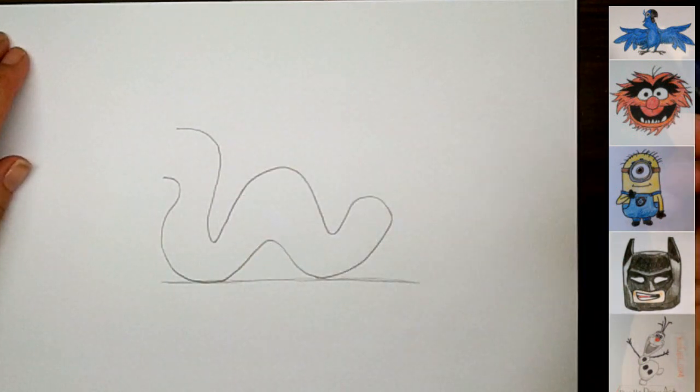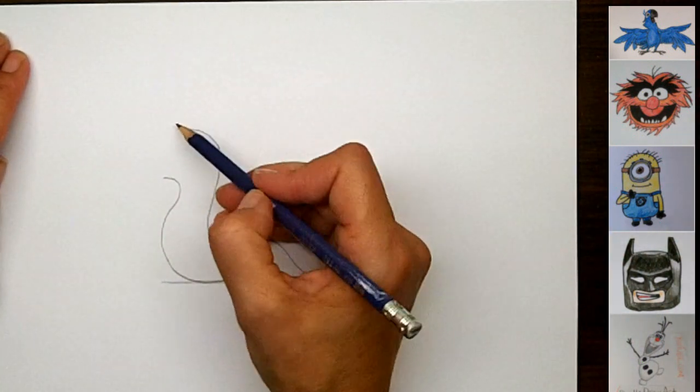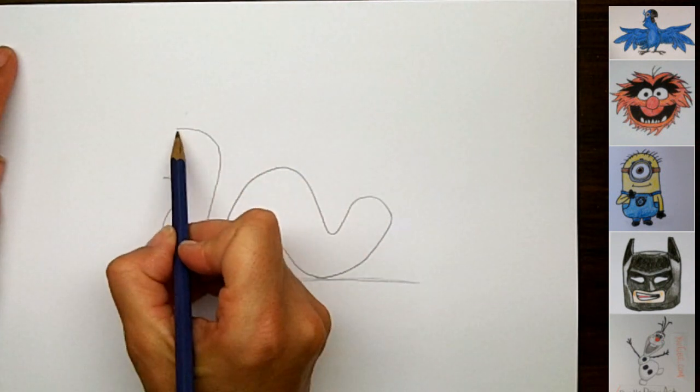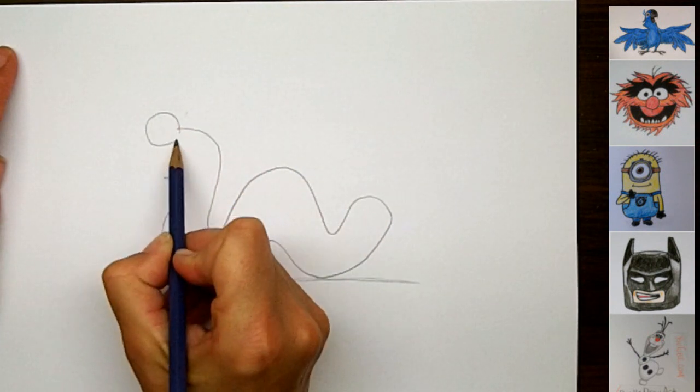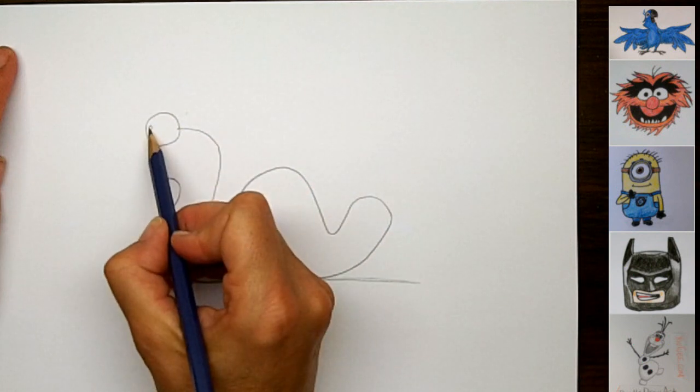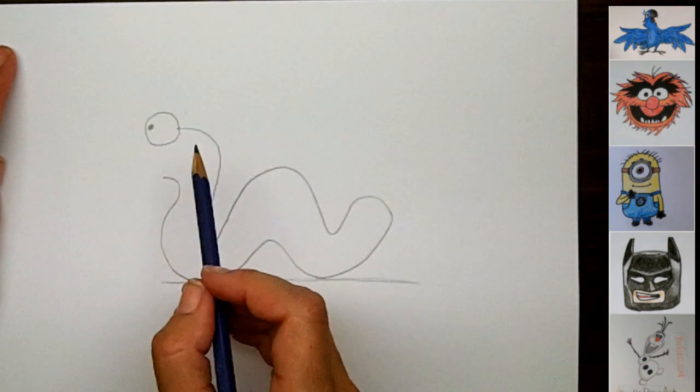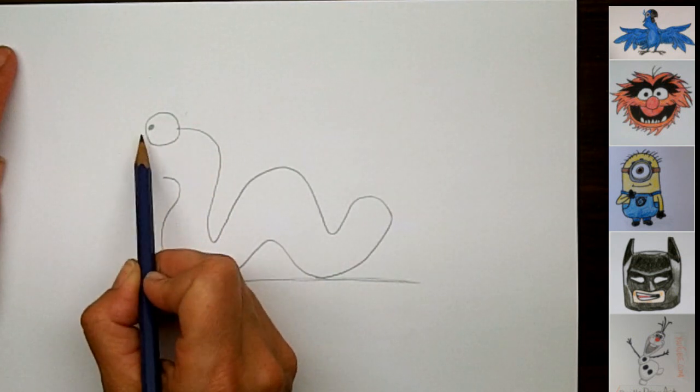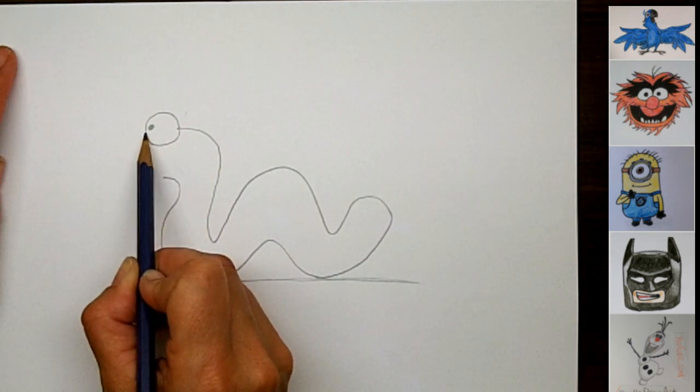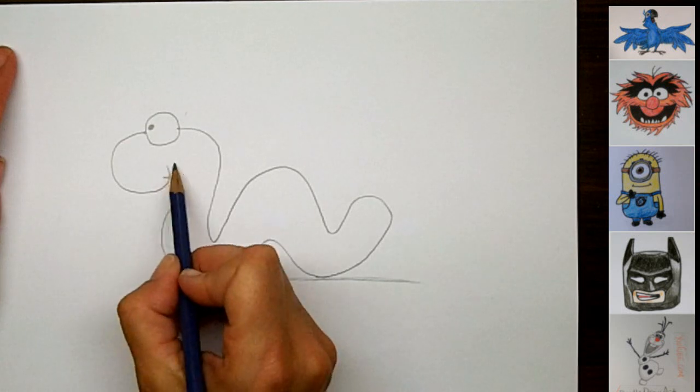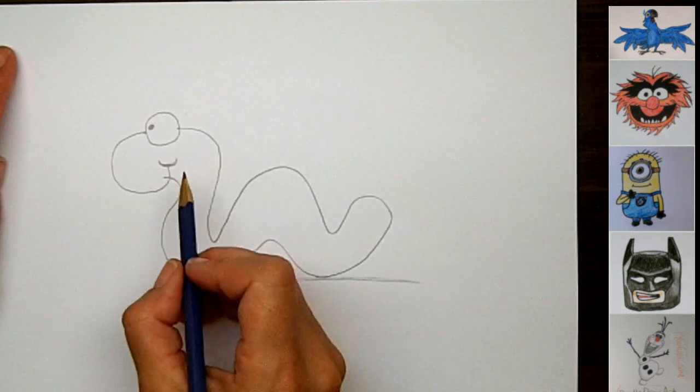So this is my whole inchworm's body shape. And then we're going to make some eyes. So he's headed this way, so I'm going to make his eyes pointing forward like this, and eyeballs pointing forward. Now, worms don't actually have the same kind of eyes as this, but it's a cartoon, so we do crazy things when we draw cartoons. And then we'll draw his snout, so we're going to go out around and curve under like this, and of course he's happy, so make a little smile.